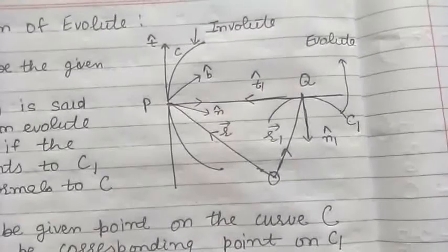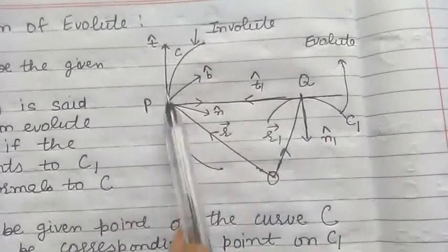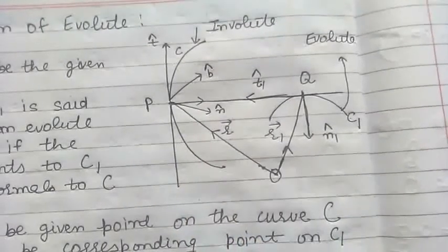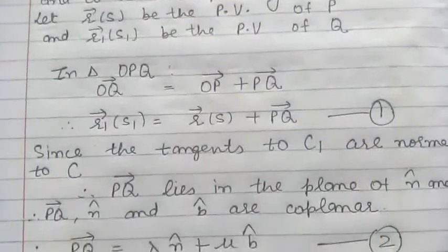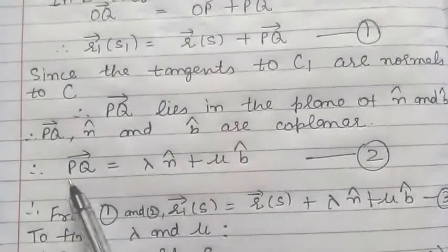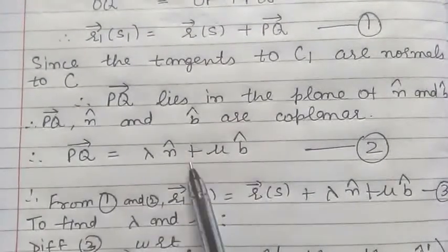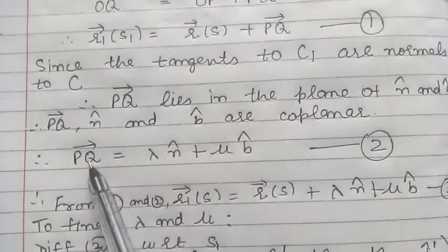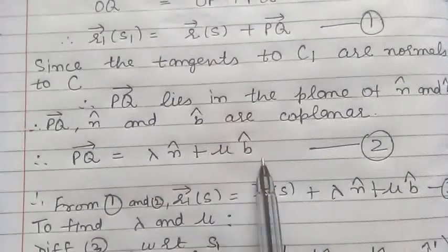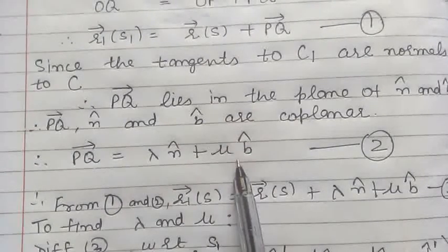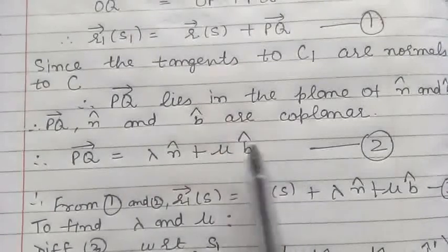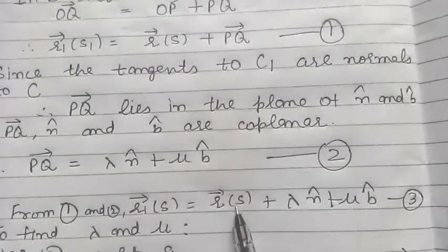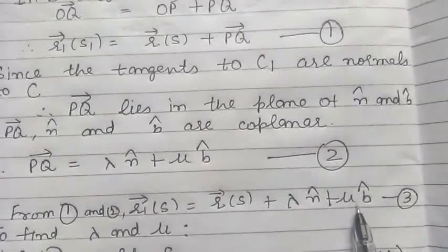From the figure we can see that the three vectors — vector PQ, vector B cap, and vector N cap — are lying in the same plane. So these three vectors are coplanar vectors. By applying the definition of coplanar vectors, we can say that vector PQ can be written as the linear combination of the vectors N cap and B cap. So we can write vector PQ as λ into N cap plus μ into B cap, where λ and μ are scalars. Substituting this into equation 1, we get vector R1 equal to vector R plus λ N cap plus μ B cap.